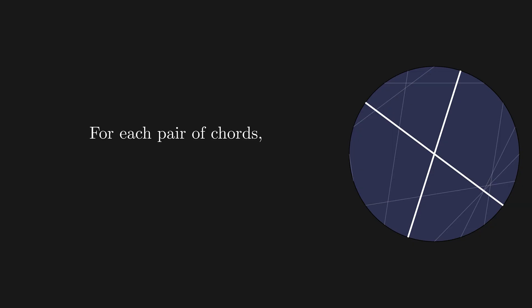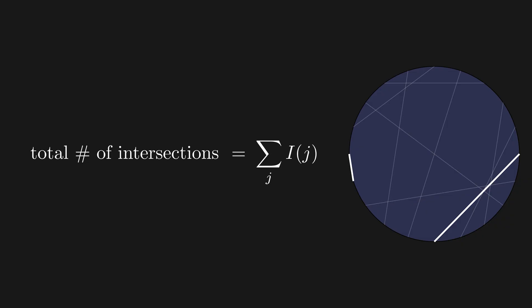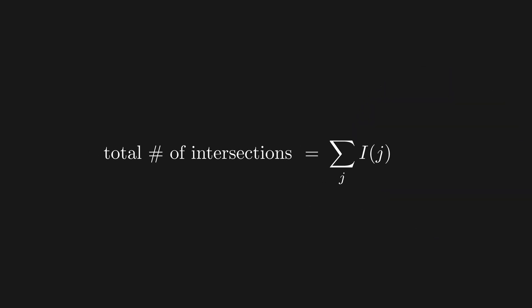So for each pair of chords, the expected number of intersections is the probability of intersection, which is 1 third. Now the total number of intersections will be the sum over all pairs of chords of the indicator of that pair intersecting. To find the average, we can apply expected value to both sides. And by a rule called the linearity of expectation, we can pull the expected value inside the sum. We know the expected value of each indicator is 1 third, which means we're just summing up 1 third, but over how many pairs of chords.